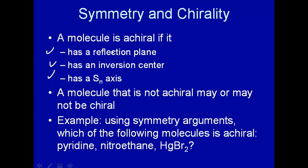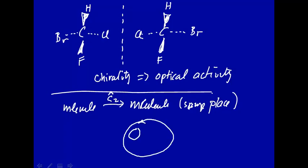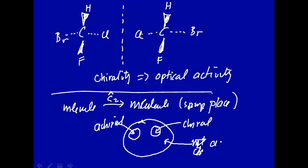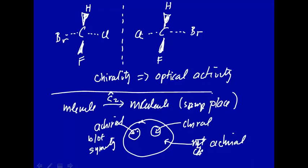Suppose a molecule does not have a reflection plane or inversion center or an Sn axis. Well, that means it could be chiral, but not necessarily. If you look at this in terms of a Venn diagram, we have a class of all molecules — some are achiral, some are chiral. Those that are achiral because of symmetry — because they have these symmetry elements — we know for sure they are achiral. But there could be other achiral and chiral molecules beyond that.